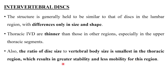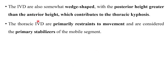As mentioned previously, if a particular region has greater stability, mobility will be compromised, and vice versa. The thoracic region has one of the greatest stabilities, which is why this region has lesser mobility.